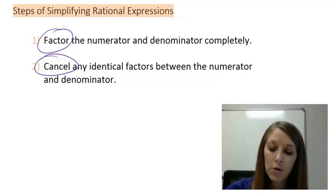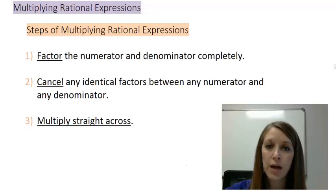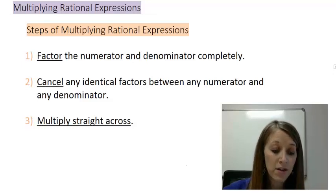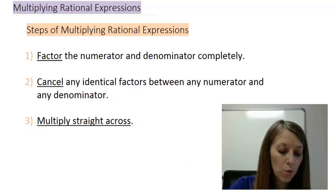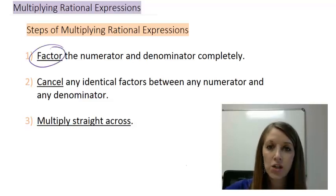So if we want to multiply two of these rational expressions, our steps are exactly the same, except we have an additional third step. We again need to factor both the numerator and denominator separately. But here I'm going to have two or more fractions that I need to do that in, so there's more factoring involved.